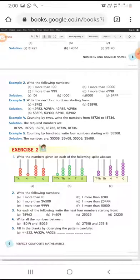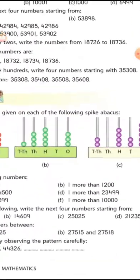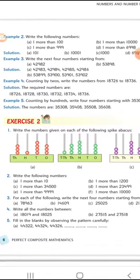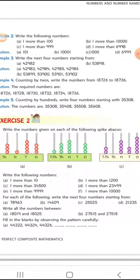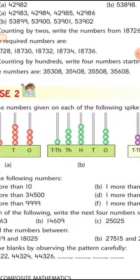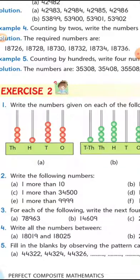Now let's begin exercise number two. Question number one says: write the numbers shown on each of the following spike abacus diagrams. We have done the same in example number one. You can do this in your book, or you can make a beautiful diagram, color it with pencil color, and write it neatly in your notebook.